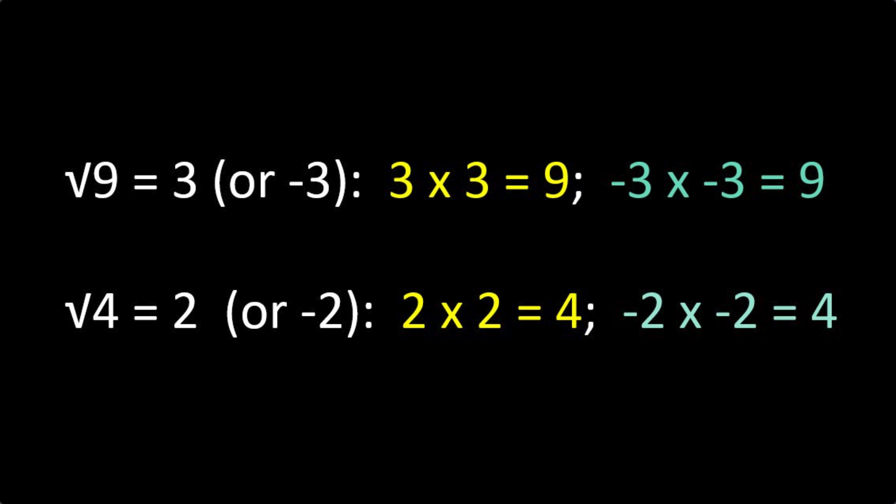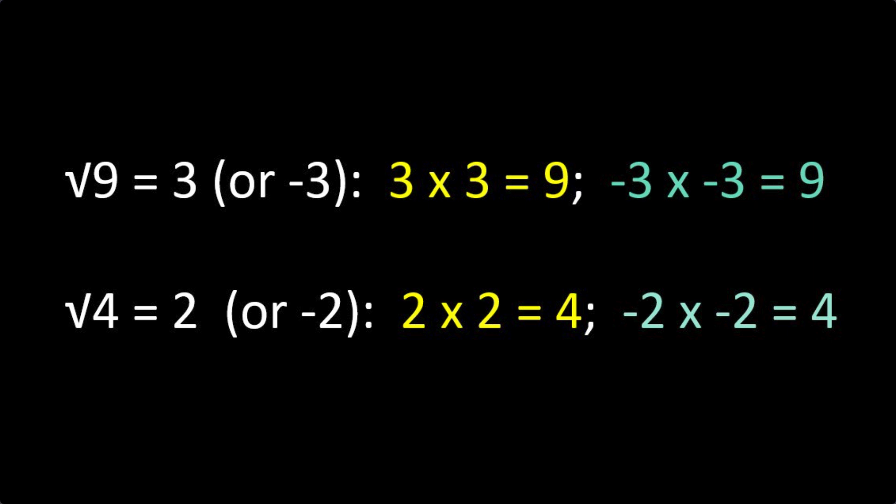But you can't find a number which, multiplied by itself, gives three. By trial and error, we find it must be more than 1.73 but less than 1.74.